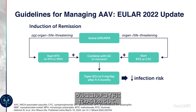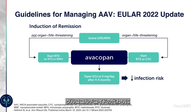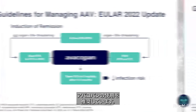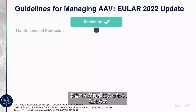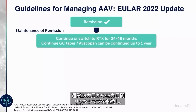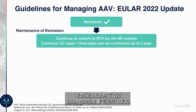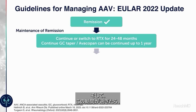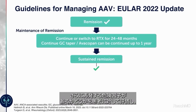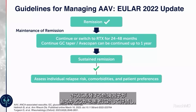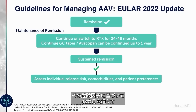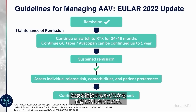Studies have shown this works as well as a slower taper and reduces the risk of infections. As an alternative to high-dose glucocorticoids, the new EULAR recommendations recommend the use of Avacopan instead of glucocorticoids for induction of remission. Once the patient gets into remission, we usually continue rituximab for a period of 24 to 48 months at a lower dose of 500 milligrams every 6 months. After this time period, the patient is evaluated for risk factors for further relapses, with shared decision-making about whether treatment is continued beyond 48 months.